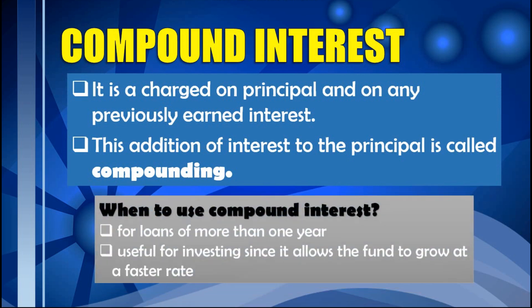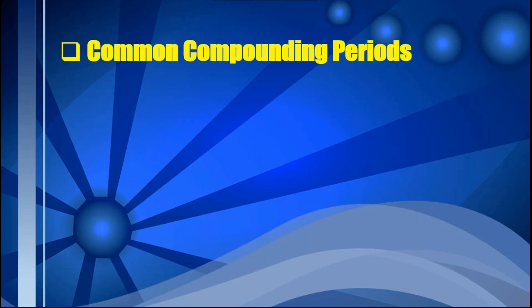So when do we use compound interest? Usually, this is used for loans of more than one year. It is also useful for investing, since it allows the fund to grow at a faster rate. When we say compounding, we need to take note of the common compounding periods — the span of time between when interest was last compounded and when it will be compounded again.